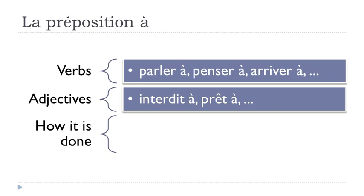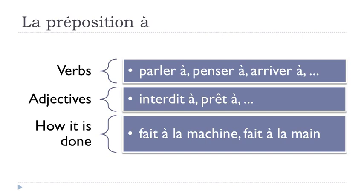It's also possible to use this preposition À when you want to express how something is done. For instance, when you want to say it's been done by machine or by hand — handmade — you use 'fait': 'fait à la machine', 'fait à la main'.